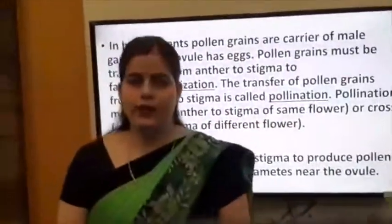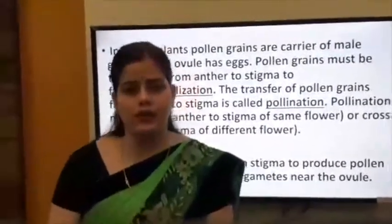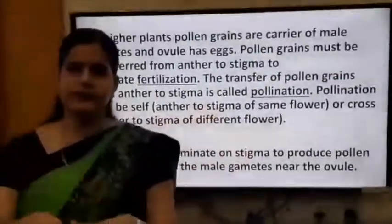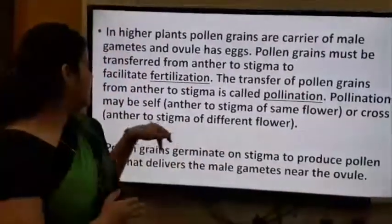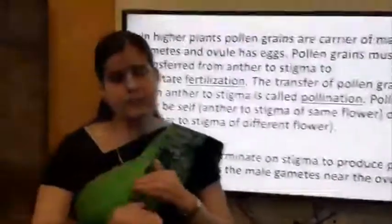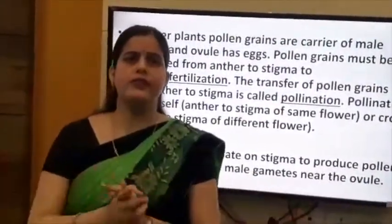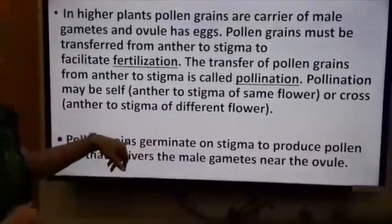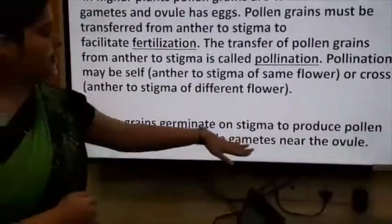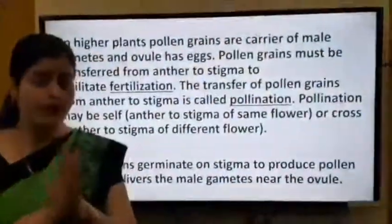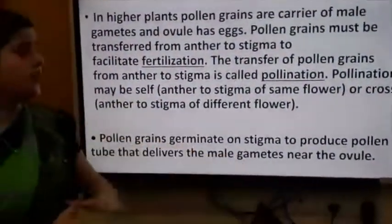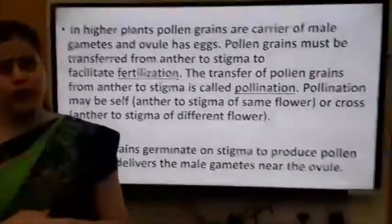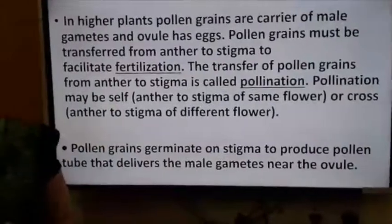When pollen grains reach the stigma, they germinate to produce a pollen tube. The pollen tube delivers the male gametes near the ovule. This is how male gametes are transferred to the egg by means of the pollen tube.